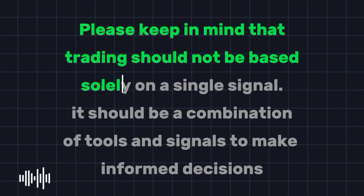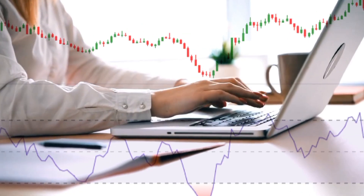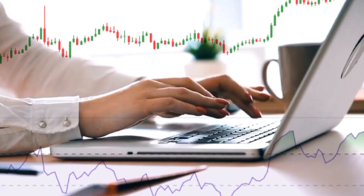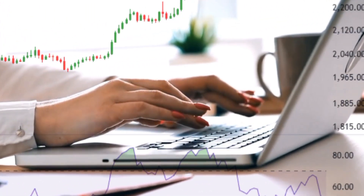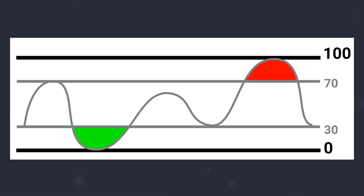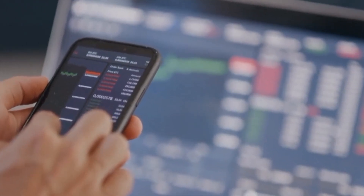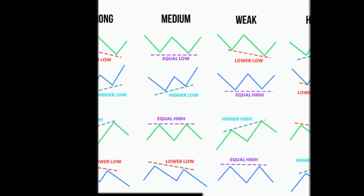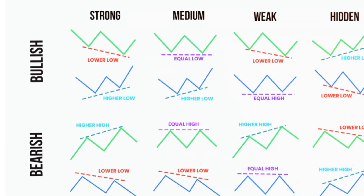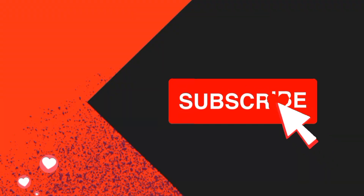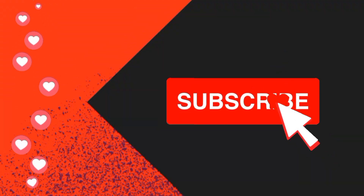Please keep in mind that trading should not be based solely on a single signal — it should be a combination of tools and signals to make informed decisions. In future lessons, we will teach you how to combine RSI with other technical tools to develop a comprehensive trading system. Now that you've learned how to spot overbought and oversold zones, start practicing today. In the next video, we'll dive into divergences — make sure to subscribe and hit the notification bell to stay updated.